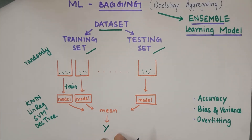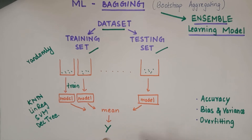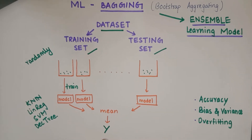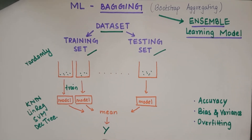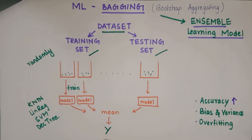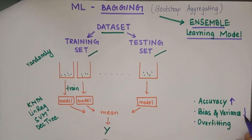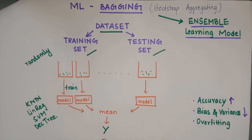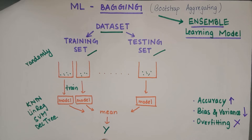Bagging helps you to increase your accuracy, decrease or reduce your bias and variance, and avoid overfitting.